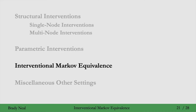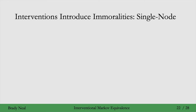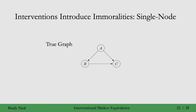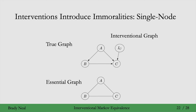We'll first develop this notion of interventional Markov equivalence in the single-node intervention case, with single-node parametric interventions. Consider the true graph where we have the complete graph on A, B, and C. We know that the essential graph here is just the complete graph where all the edges are undirected. If we were intervening on C, we would get this interventional graph, where we draw an edge from the intervention node to the variable we're intervening on.